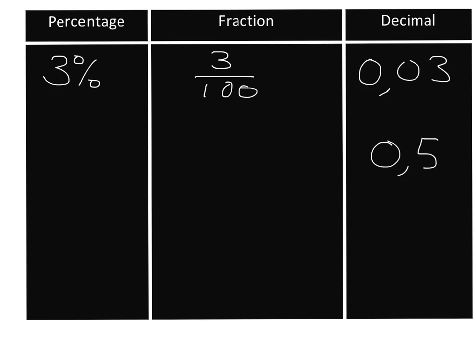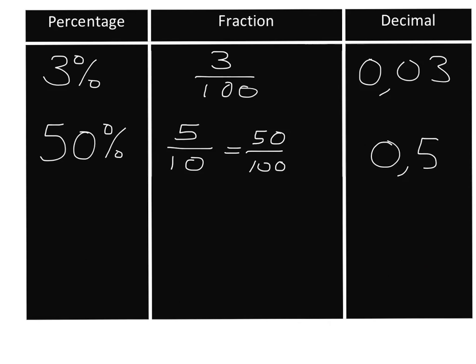Say we have 0,5. That decimal we know will be 5 over 10 as a fraction. If we want to get to a percentage we must write it as a fraction over 100, and we know how to make equivalent fractions. We've multiplied the bottom by 10, so we multiply the top by 10 as well — we get 50 over 100, and our answer is 50 percent. So 50 percent equals 5 tenths, or 50 over 100, which equals 0,5. Let's write that fraction in simplest form: divide both 5 and 10 by 5 and you get a half. So 50 percent is a half, which is 0,5.